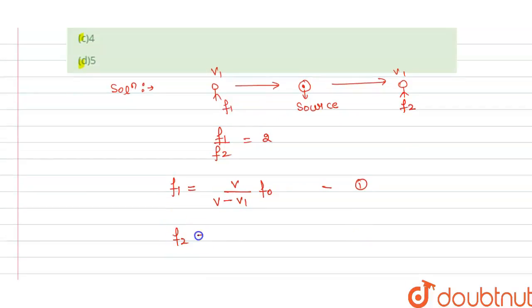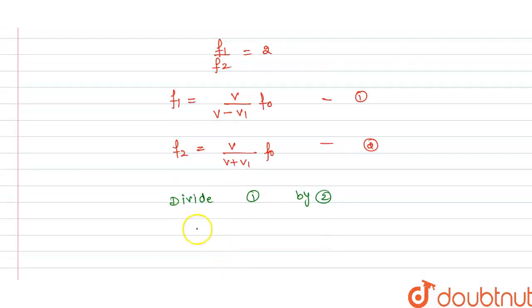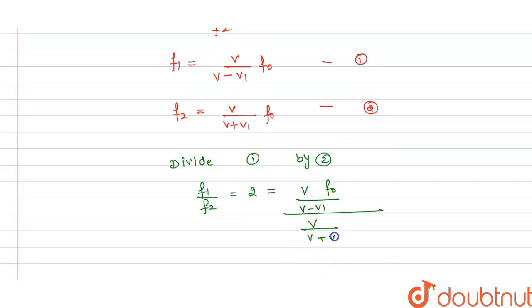Similarly, for the second case, the apparent frequency when the observer moves away from the source is: f2 = v divided by (v plus v1) times f0, where f0 is the initial frequency. Now we divide equation 1 by equation 2. So we get f1 divided by f2 equals 2, which equals [v divided by (v minus v1) times f0] divided by [v divided by (v plus v1) times f0].